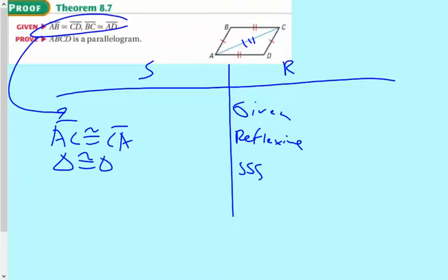Now what I'm going for here is alternate interior converse. I'm going to show the alternate interior angles are congruent, which makes the lines parallel. So I'm going to call that angle 1 and this angle 2. Angle 1 is congruent to angle 2 by CPCTC. This makes AB parallel to CD.